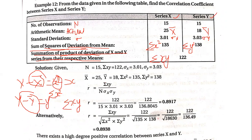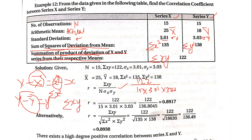Now we have all the information. There are two ways to solve this problem. First formula: sigma xy divided by n into standard deviation of x into standard deviation of y. Here sigma xy is 122, n is 15, standard deviation of x is 3.01 and standard deviation of y is 3.03. Simplifying, you get 0.8917.